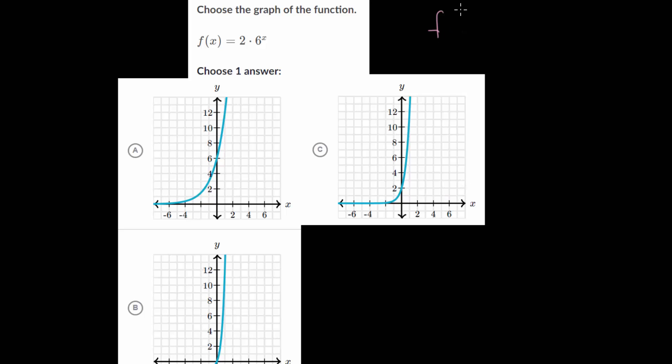We have f(x) equals 2 multiplied by 6 to the x power. If we make a quick table, we're just going to plug in different x values and see what the function values look like. Let's start with 0. We have 2 times 6 to the 0 power, but anything to the 0 power is just 1, so this would be 2. Our graph has to go through the point (0, 2).